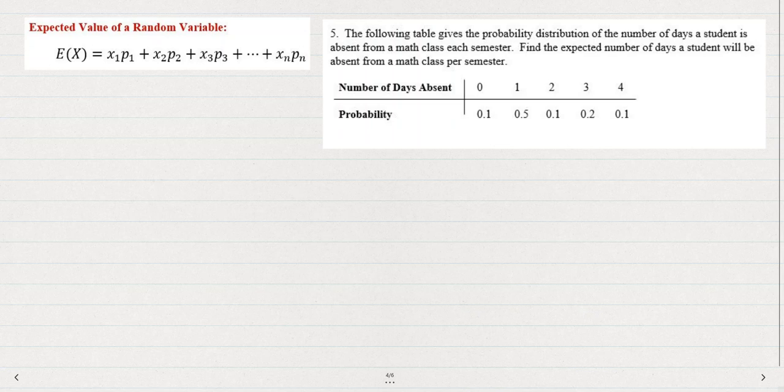But make sure you're demonstrating that you know how to do these types of examples. And number five, it's just more of the same, right? The expected value. We've got the number of days a student is absent from math class. And then we want to find the expected value for the expected number of days that a student will be absent per semester. And we could use the formula, expected value of x equals, and it looks like there's one, two, three, four, five different values given.